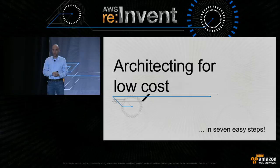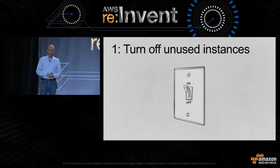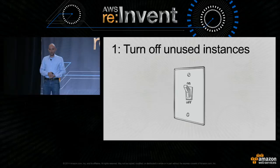Let's look at seven strategies for architecting for low cost. Step number one, and the easiest way to save money, is to turn off unused instances.